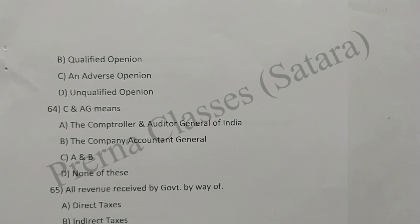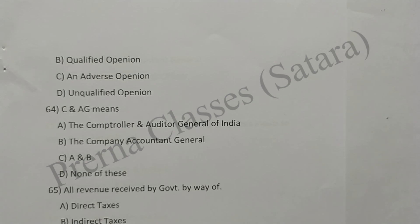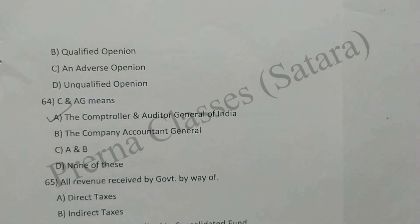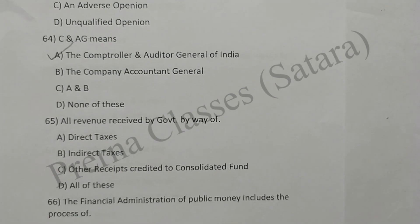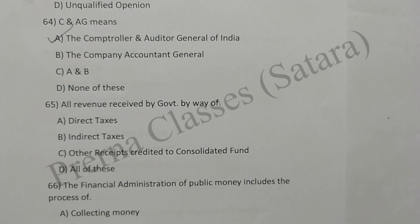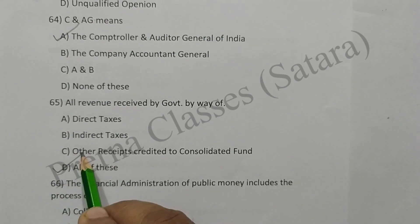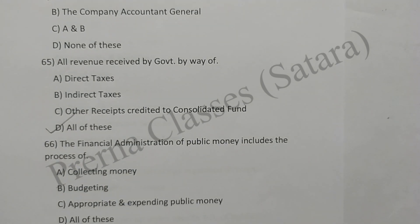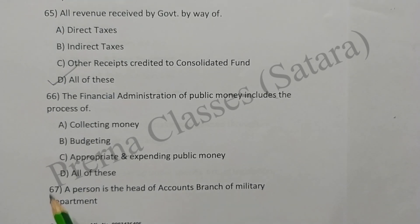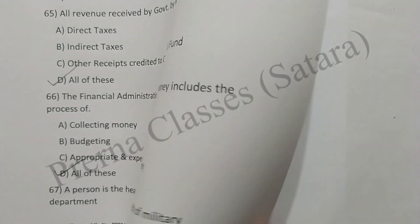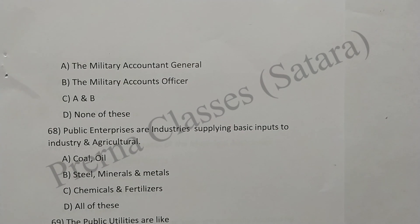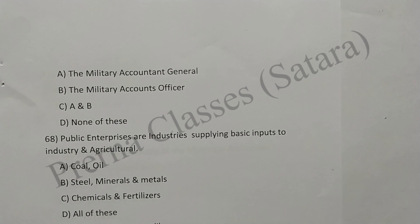Question 64: C&AG means the Comptroller and Auditor General of India. Option A is correct. Question 65: All revenue received by government by way of direct tax, indirect tax, other receipts, credit to Consolidated Fund, and all of these. Option D is correct. Question 66: The financial administration of public money includes the process of collecting money, budgeting, appropriation, and expending public money — all of these. Option D is correct. Question 67: The head of accounts of a branch of a military department is the Military Accounts General. Option A is correct.